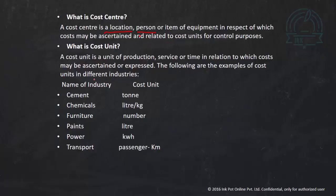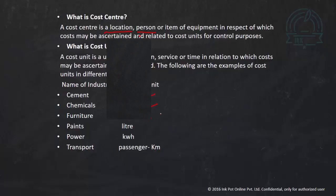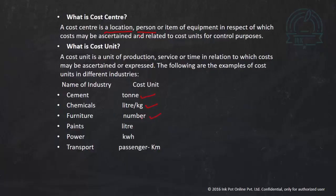Next is cost unit. Cost unit means per unit cost. In the case of cement, we calculate the cost per ton. For chemicals, cost is calculated in liters. For furniture, we calculate the number of desks or chairs produced. Paint is manufactured in liters, power in kilowatt hours. For transportation services, we calculate cost per passenger per kilometer.